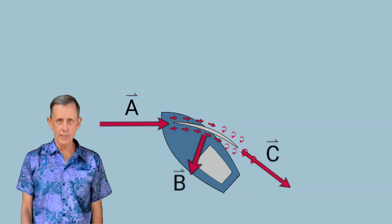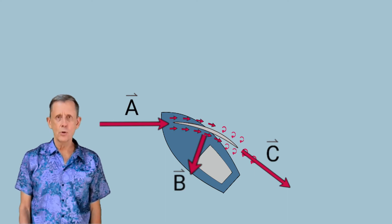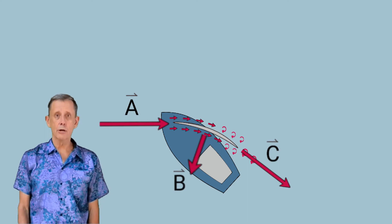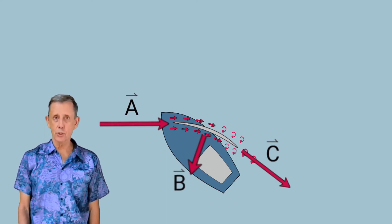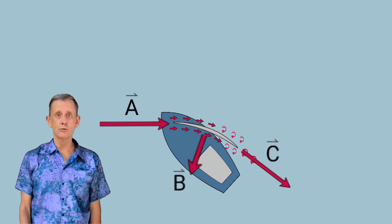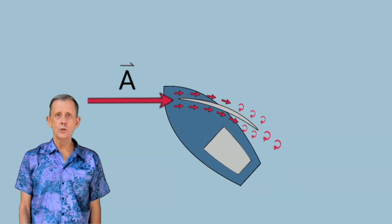Turbulence is the bane of lift. If there is turbulence in the airflow, you lose all those nice deflection vectors, which are the action. And if there is no action, there is no equal and opposite reaction to drive your boat forward. So now let's look at how we can trim a sail to minimize the turbulence.